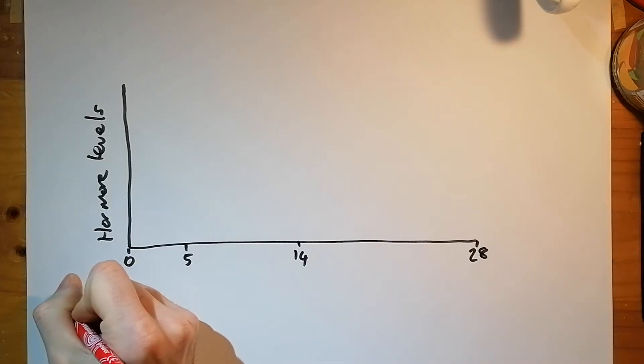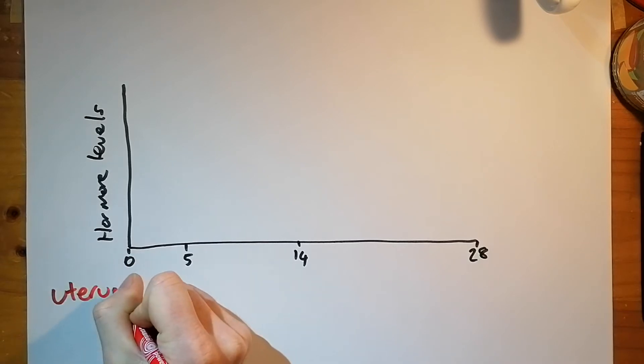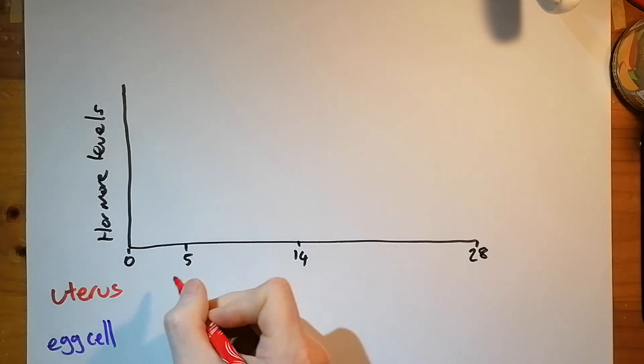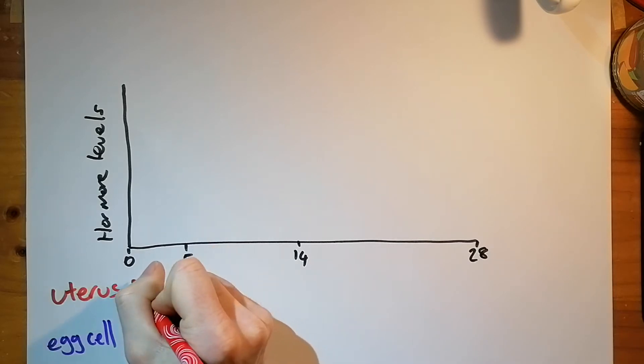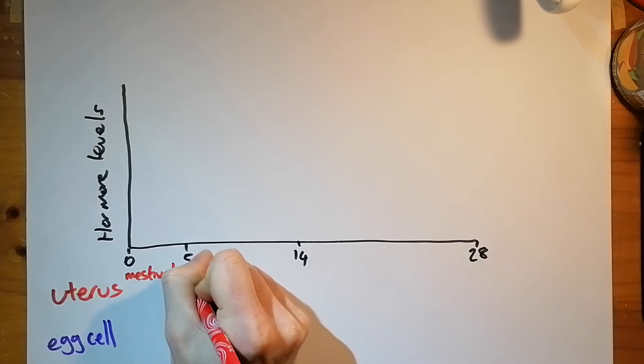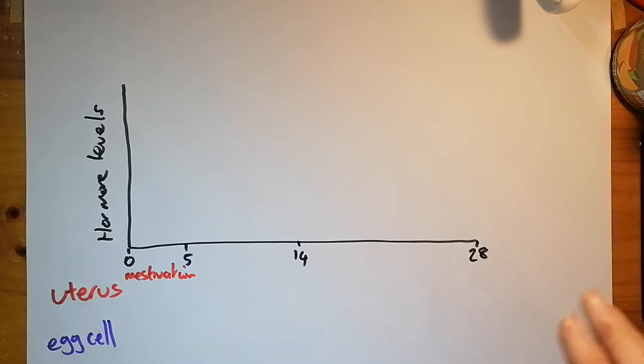We'll see what's happening to the uterus and also what's happening to our egg cell. So, we'll get the events done first actually. Between 0 and 5 days what you've got is menstruation. And that's when the uterus lining actually leaves the body of the female via the vagina.